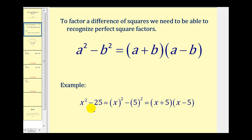Notice once we recognize the terms as perfect squares, we take one of the factors and use it to create our binomials, where one is a sum and one is a difference.